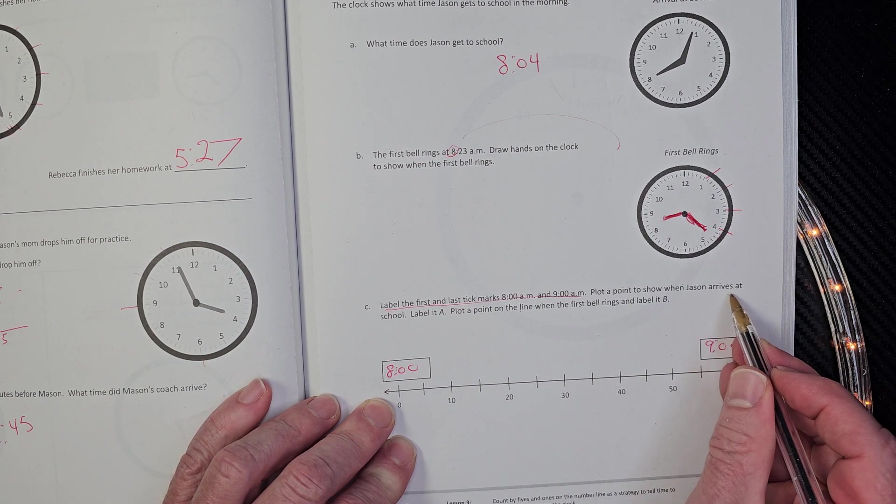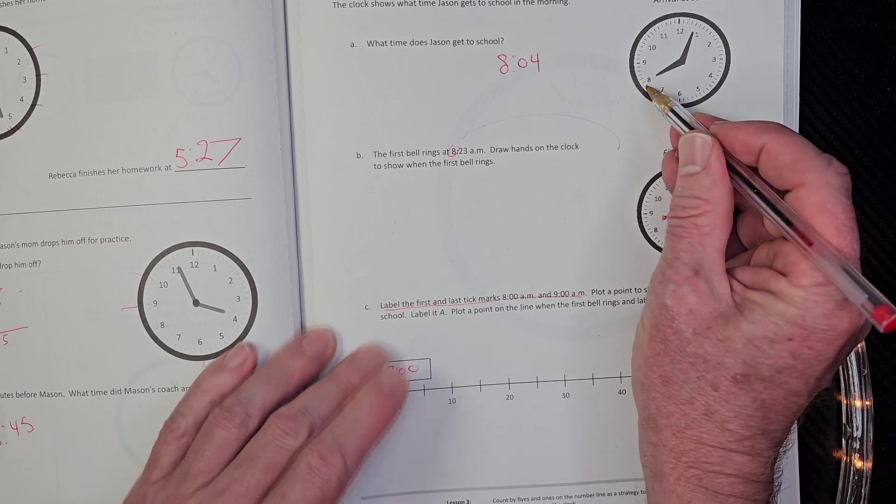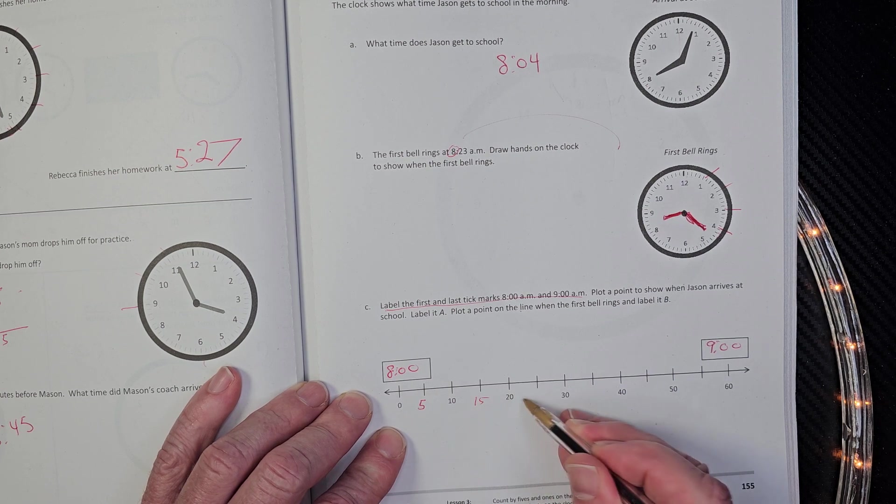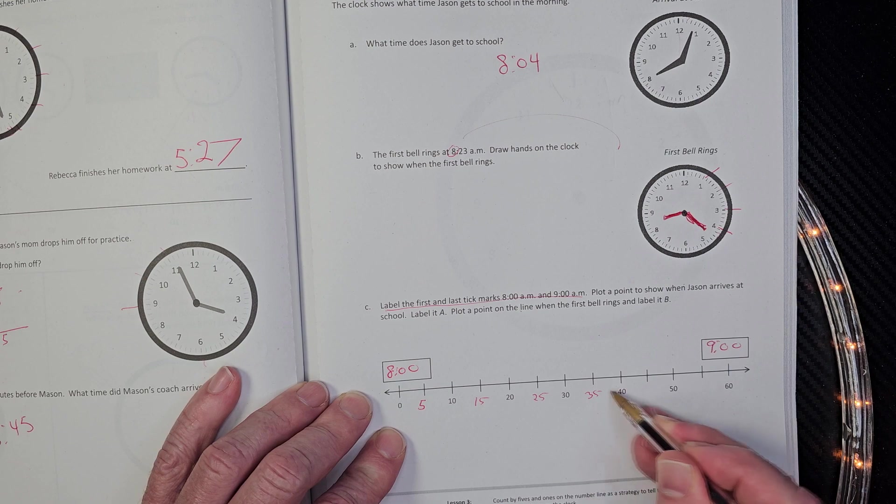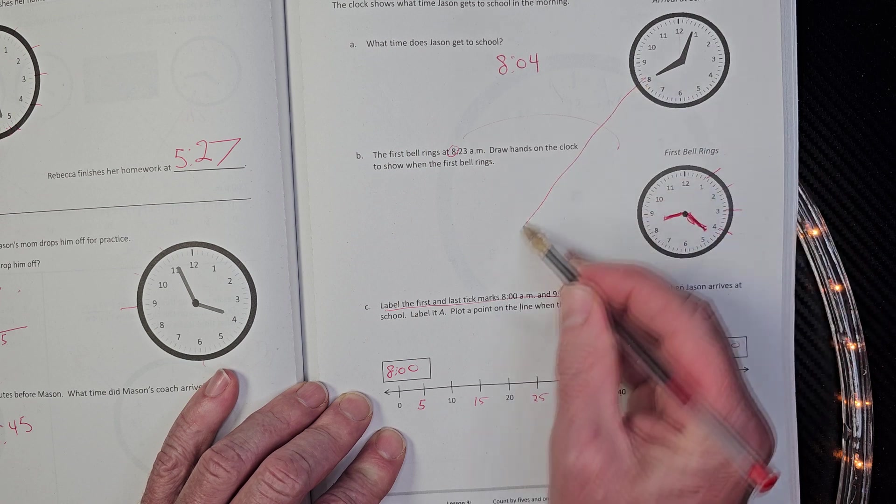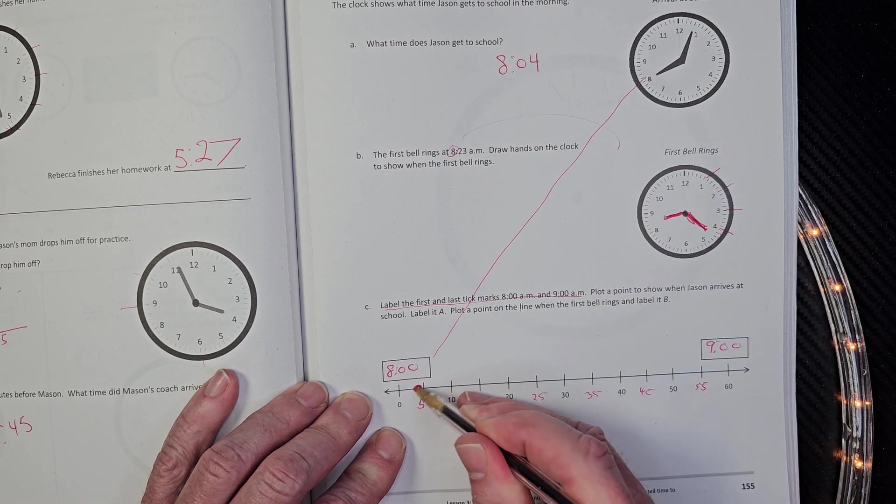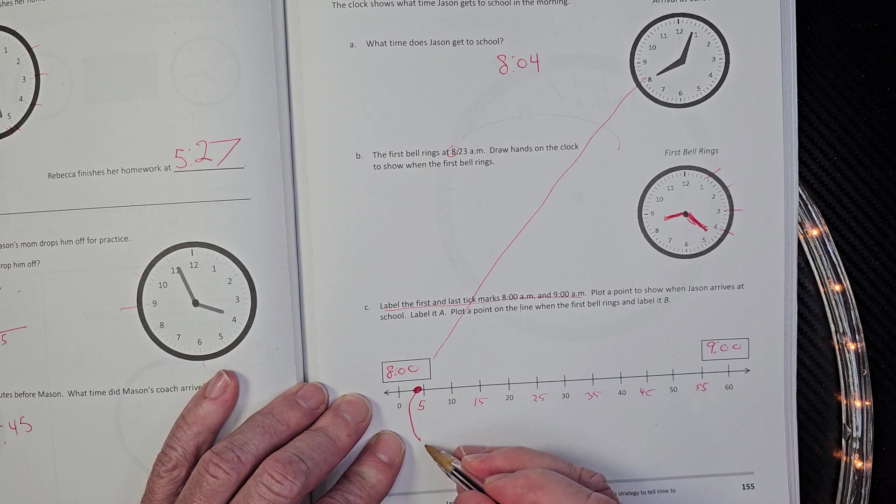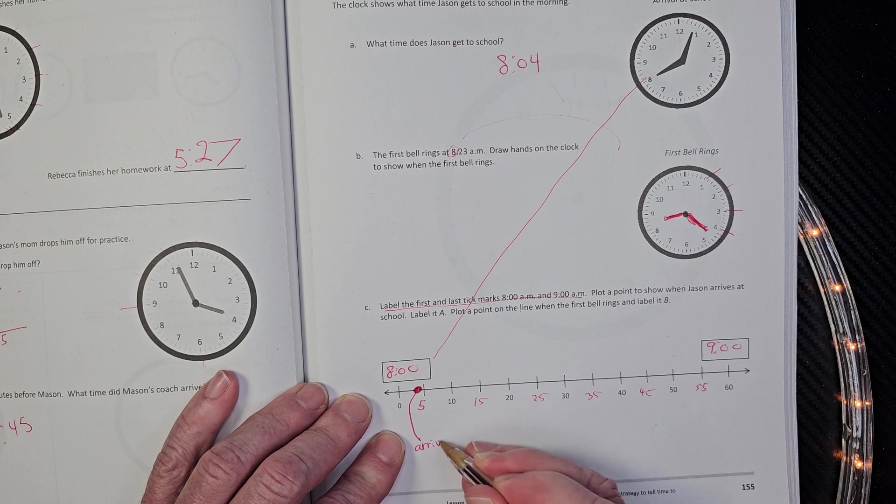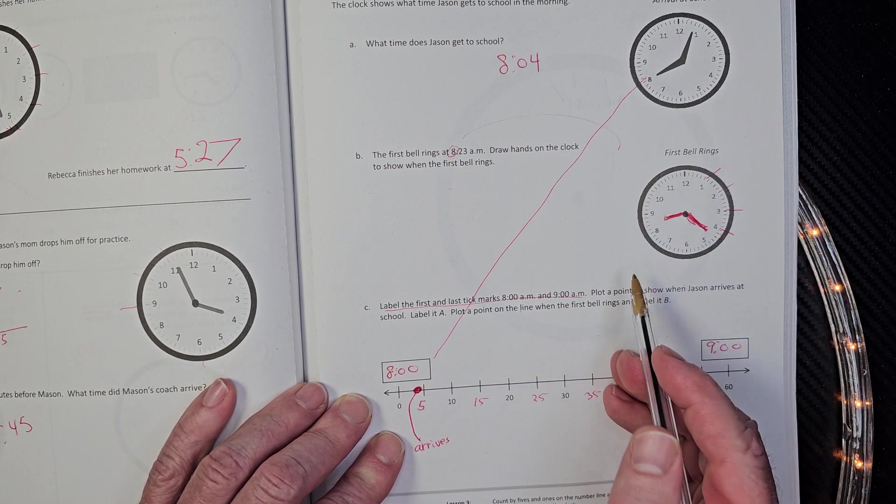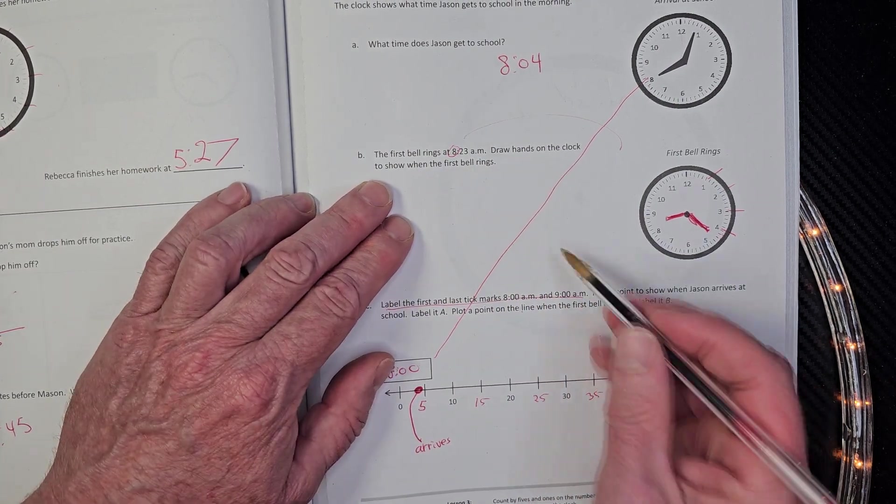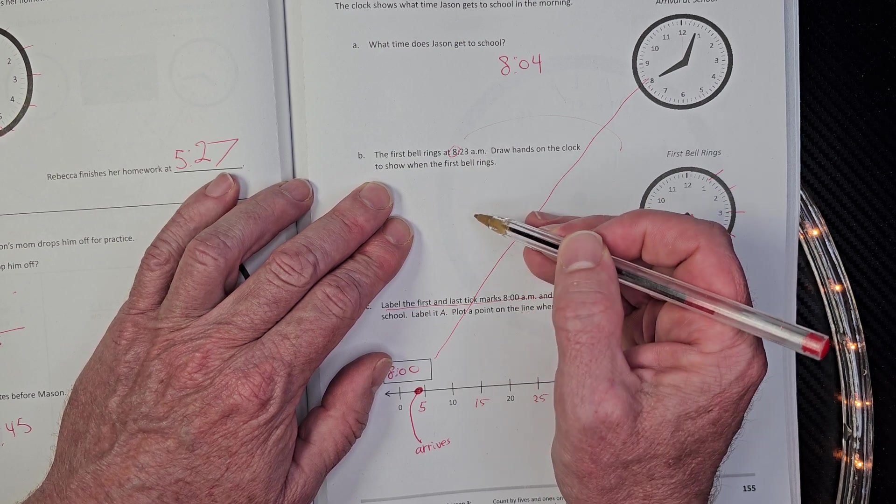Plot points to show when Jason arrives at school. All right. This is at 8.04. Again, I'm going to go ahead and put this in. 5, 10, 15, 20, 25, 30, 35, 40, 45, 50, 55. So he gets there at 8.04. So 8.04 is right here. All right. That's when he arrives. Maybe he doesn't have to be at school until 8.30. The first bell rings at 8.23 AM. That's really an odd time for the bell to ring. It's like either make it 8.20 or 8.30. But why would you have the first bell ring at 8.23? Question everything. Question everything.